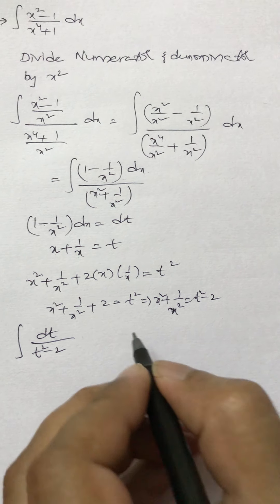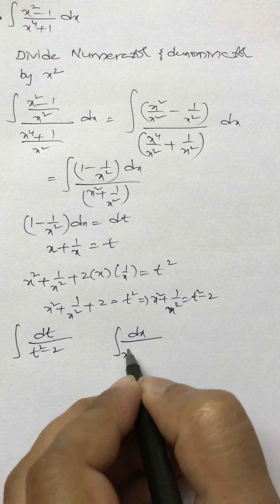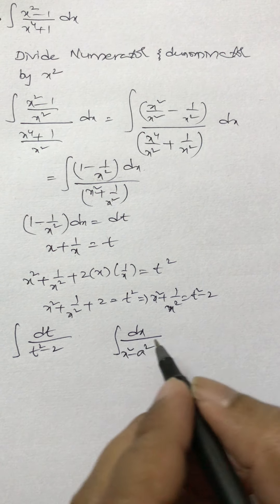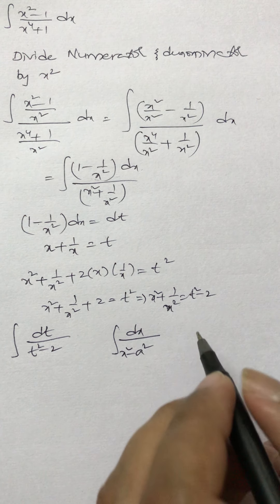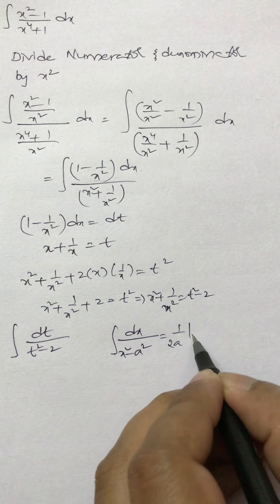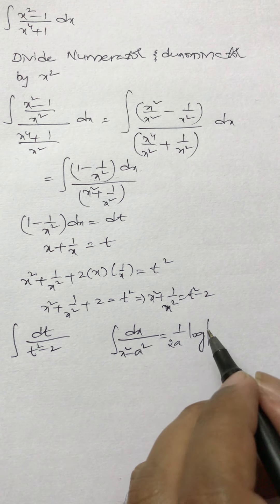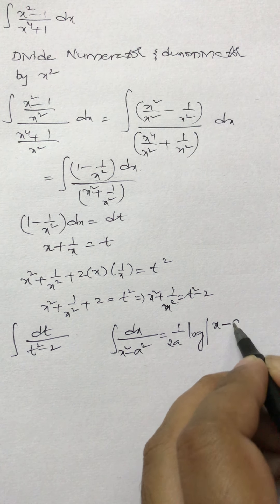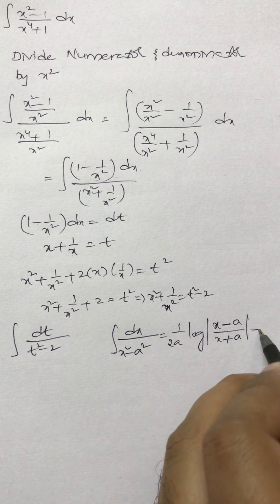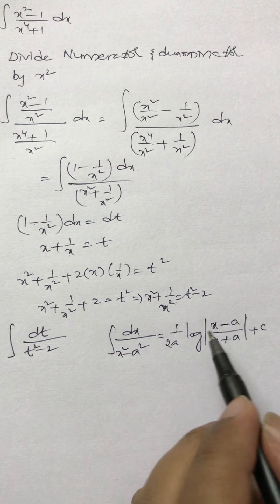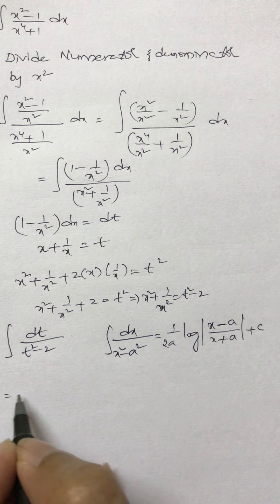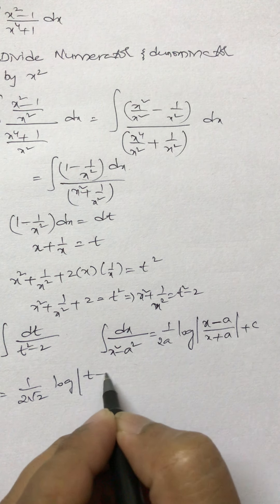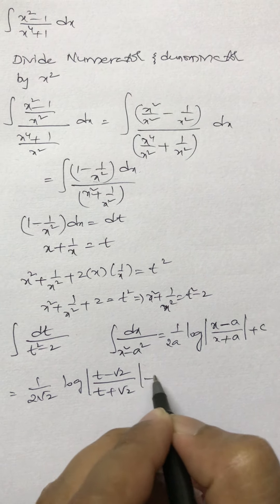For this we have a direct formula: ∫dx/(x² - a²) = (1/2a) log|( x - a)/(x + a)| + C. Applying this with a = √2, we get (1/(2√2)) log|(t - √2)/(t + √2)| + C.